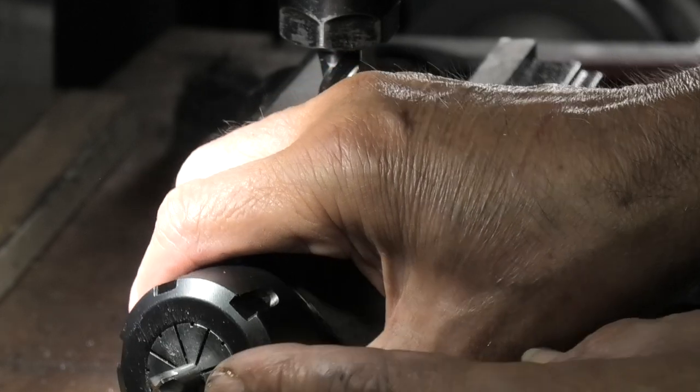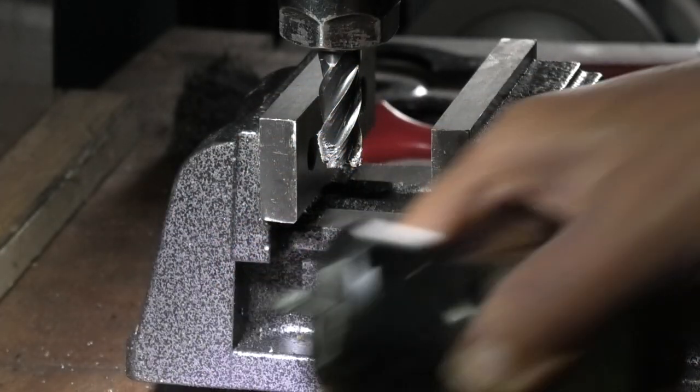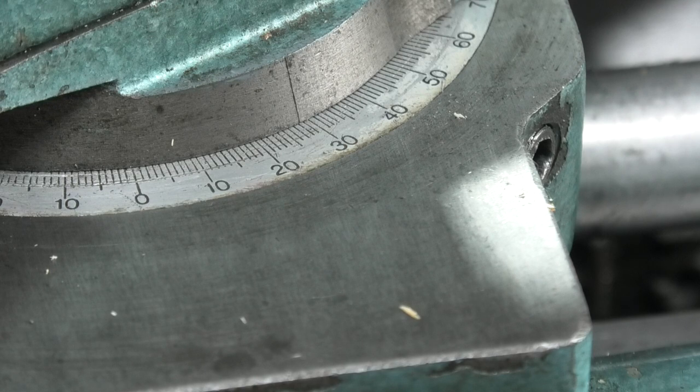So now all I need to do is put it in the lathe and form the point on it. I'll set the compound slide to about 28 degrees, and I'm just going to put a chamfer on the end of that using the compound slide.